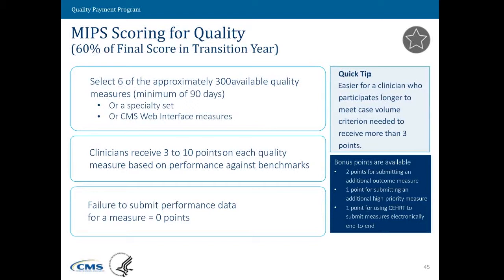So if we can move to the next slide. As Adam said, Molly just gave you an overview of all the measures and activities that are going to go into your MIPS score. I'm just going to briefly talk about how we create that score, and we're going to go category by category so you can see how this all translates to a single score at the end.